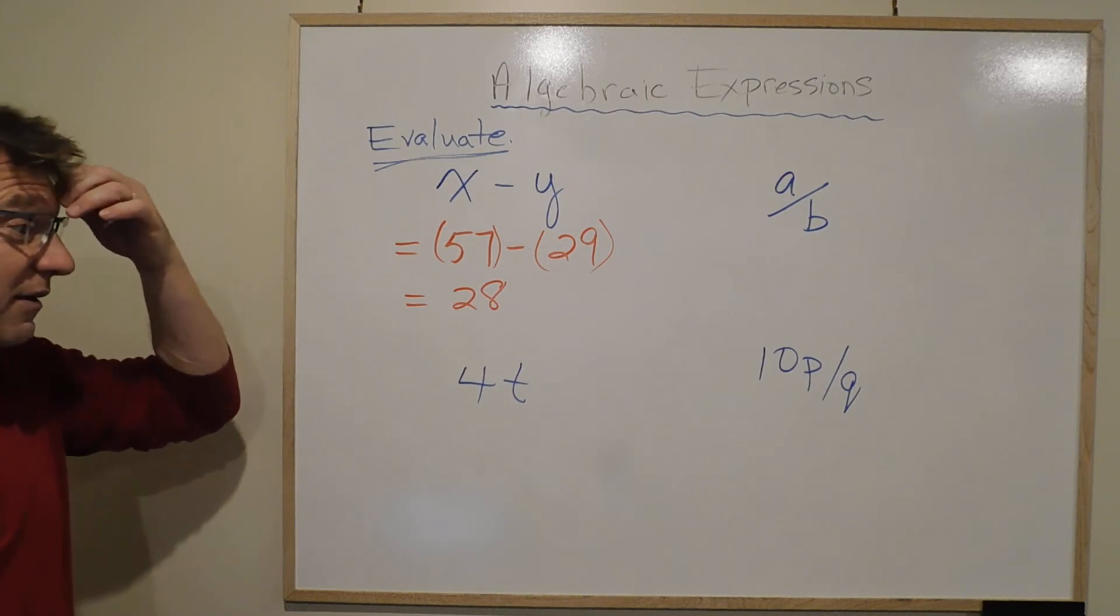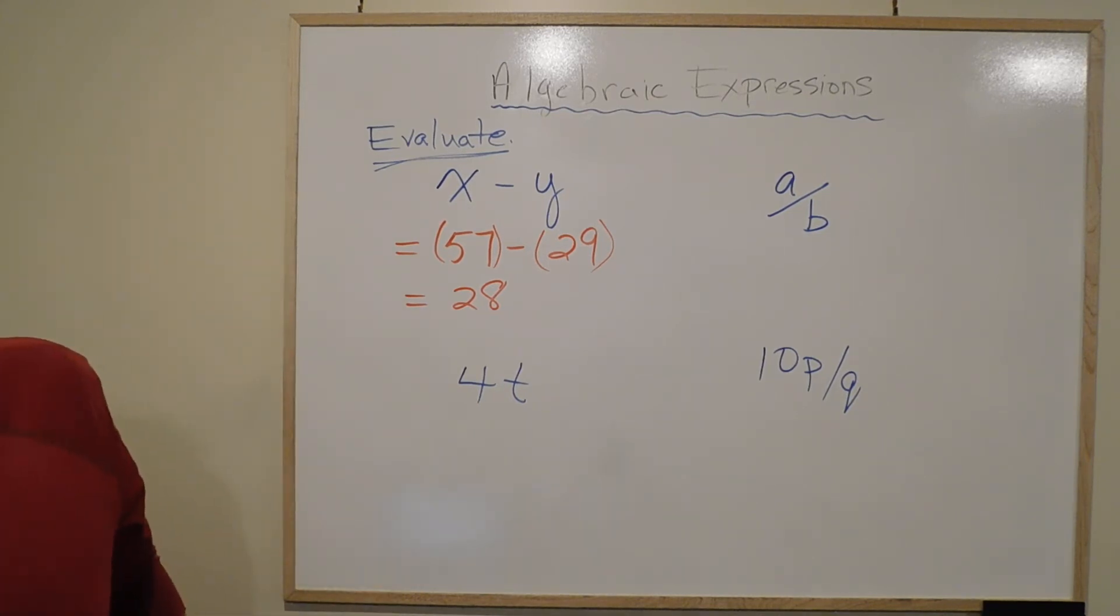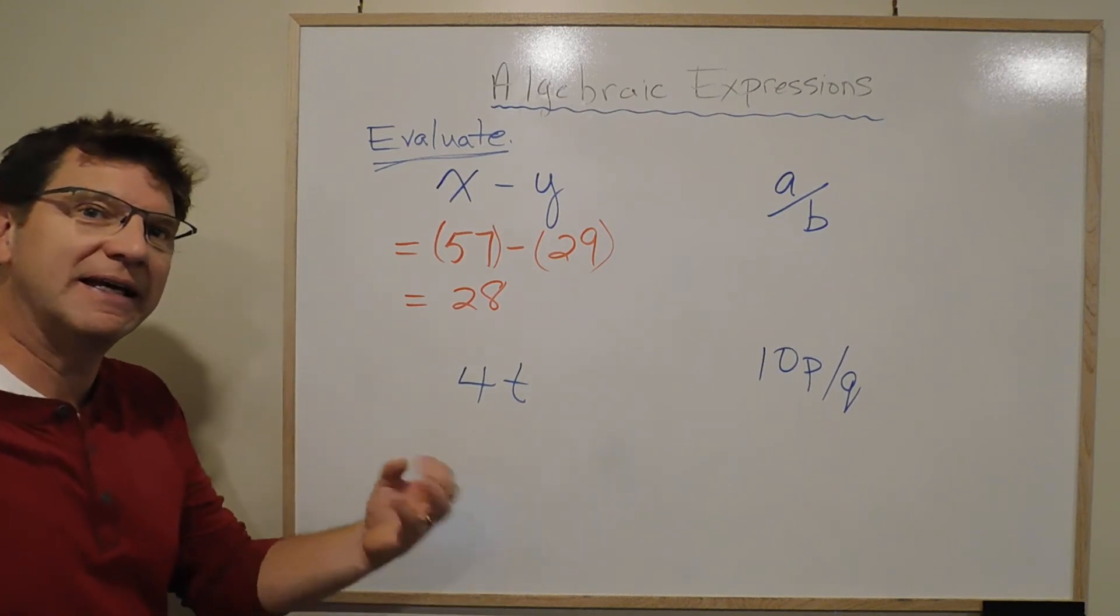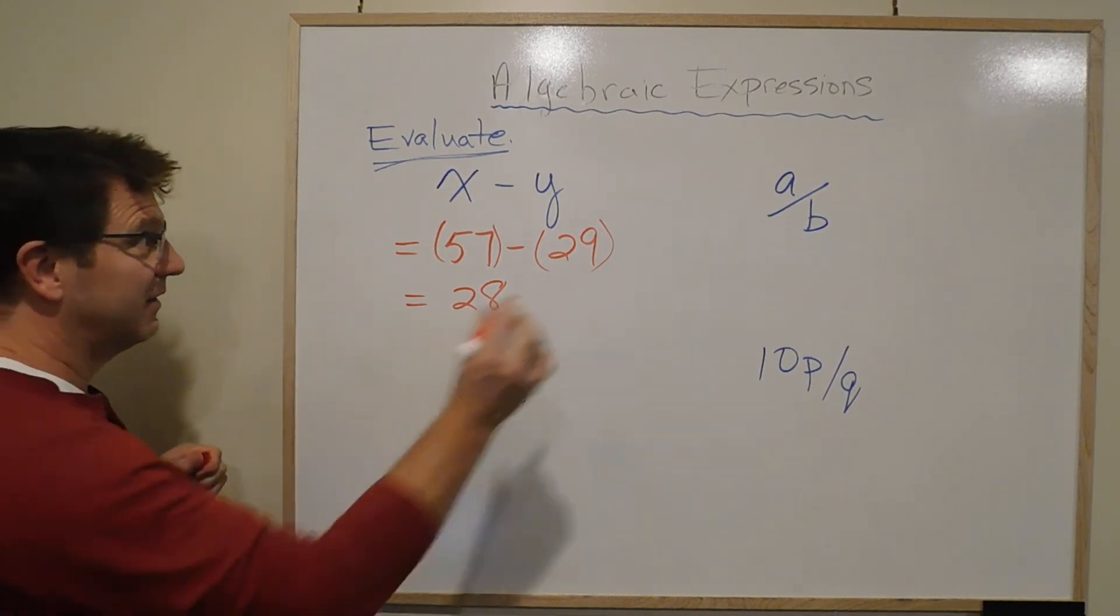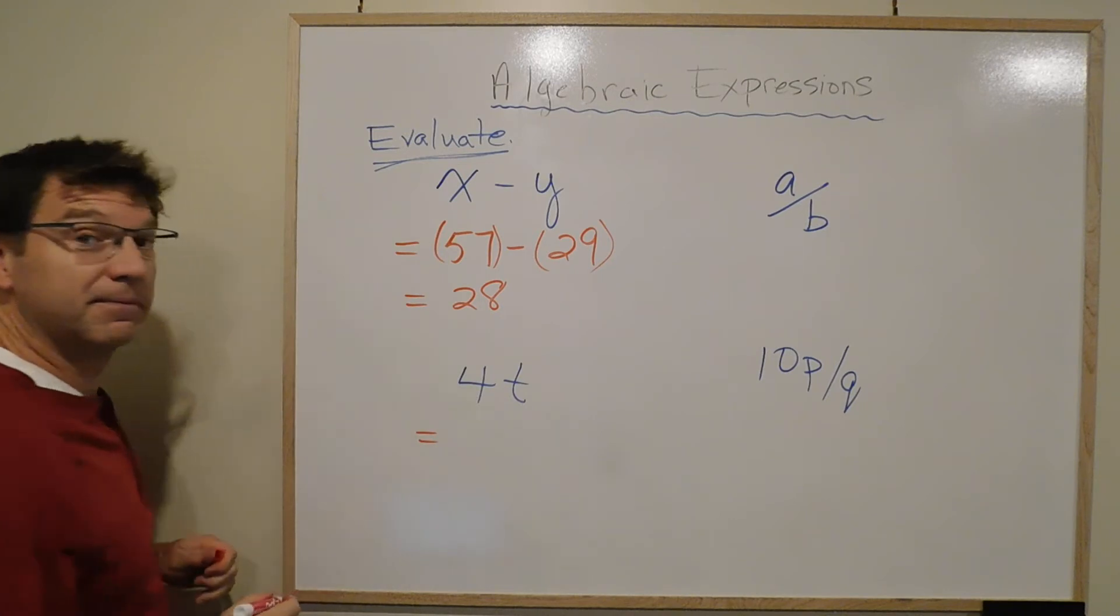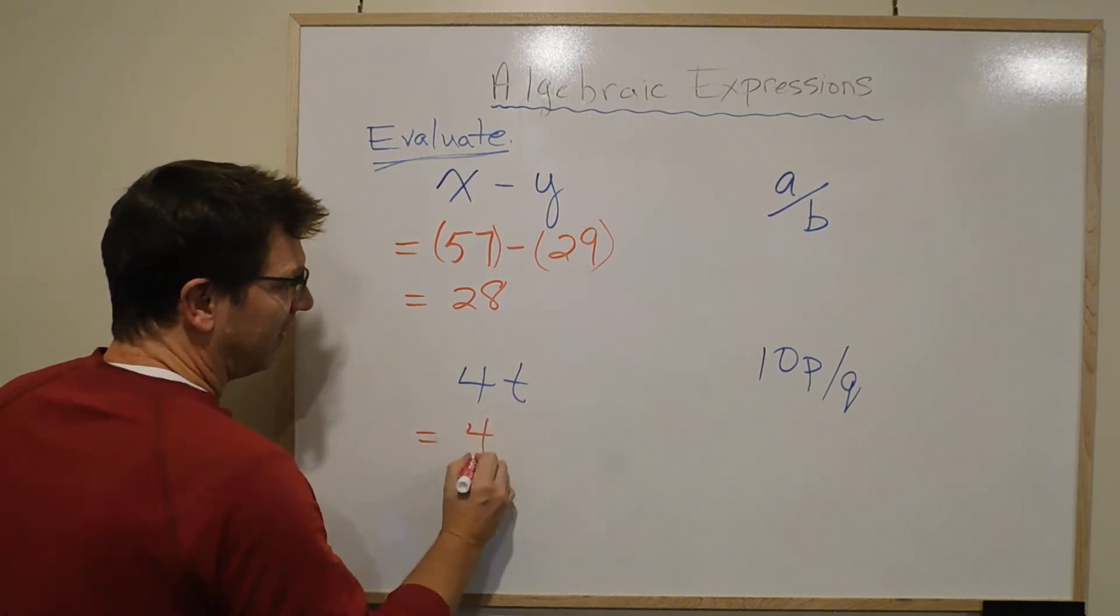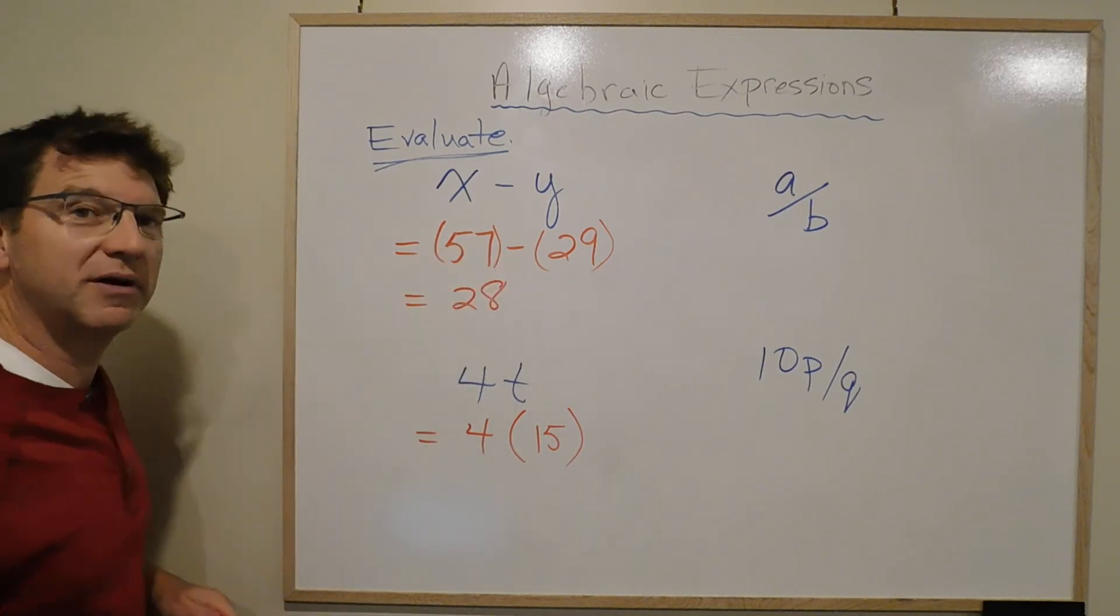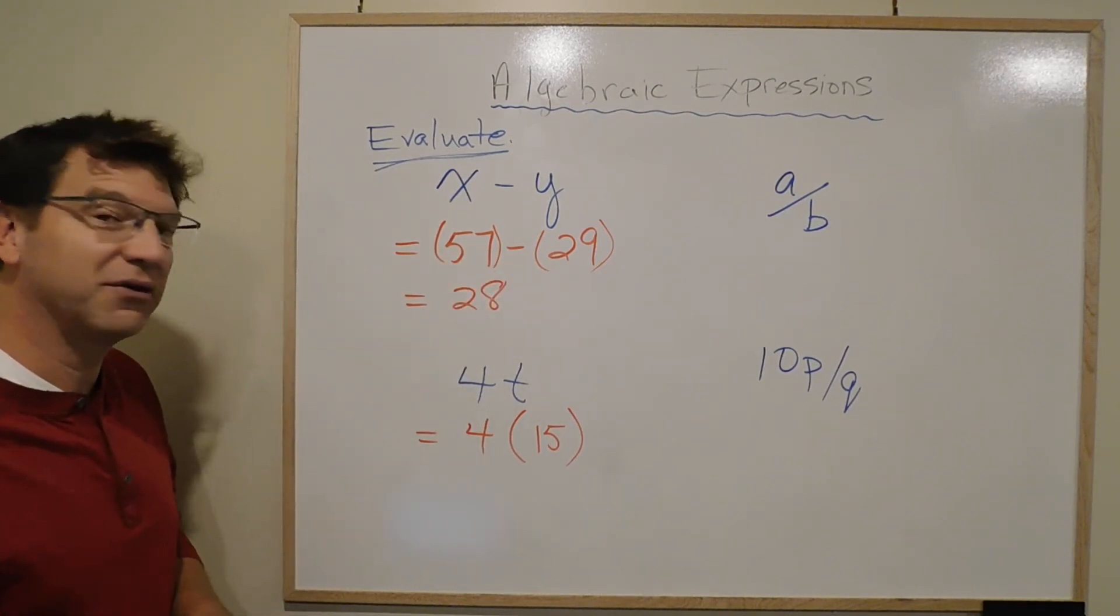This one here, 4t, it tells me that t is equal to 15, so it means I need to put 15 in for t. So we'll start with the equal sign. Now, here's where the bracket, remember I said always put it in brackets?